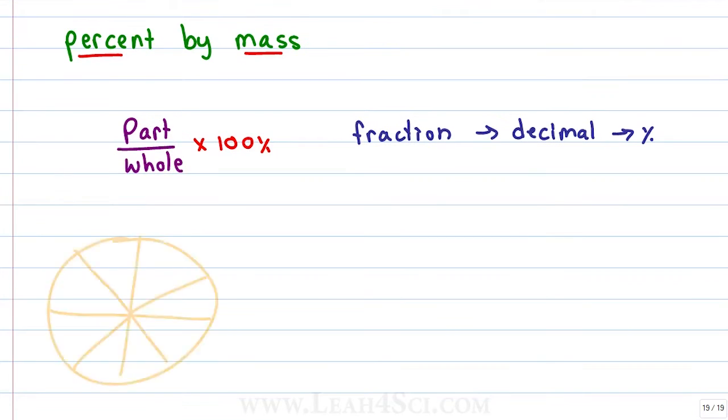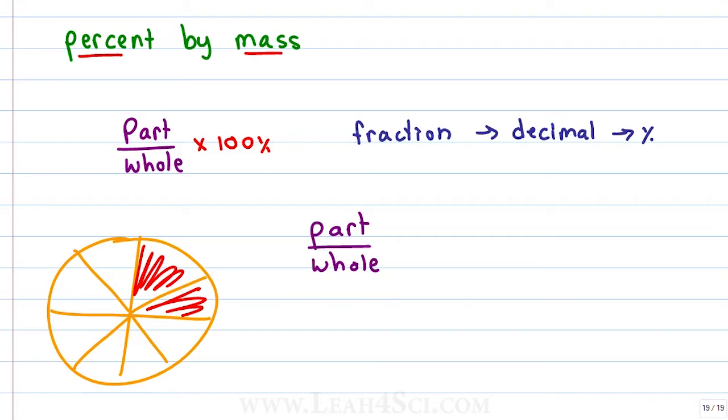You can turn that fraction into a decimal and you can turn that decimal into a percent. For example, say you ate two slices of a pizza pie, what percent of that pie did you consume? Let's set it up as part over whole. The part that you ate is two slices. The whole is the entire pie of eight slices. Slices cancel giving me two over eight which we can simplify as one over four. The fraction of pizza that you consumed is a fourth.